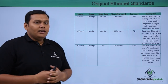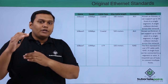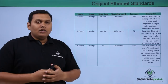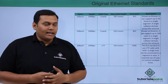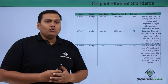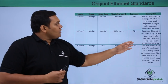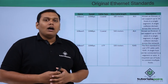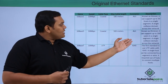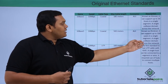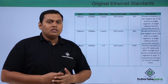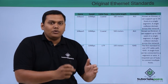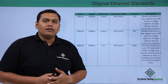The 10Base5 cable also has a speed of 10 Mbps and is a coaxial type cable, 500 meters in length, connected via an AUI connector. It is known as Thicknet and can support up to 100 users in a single segment — a single collision domain across the network.